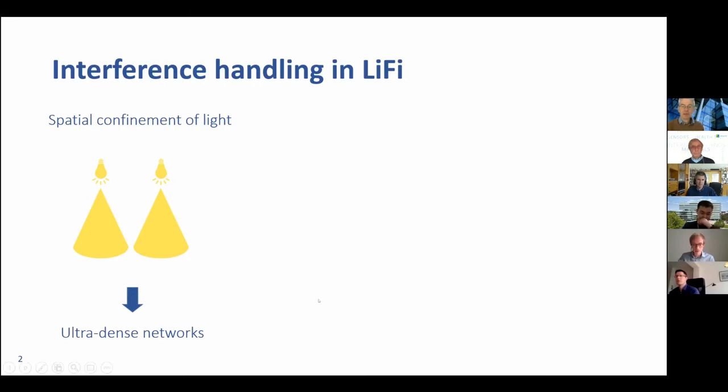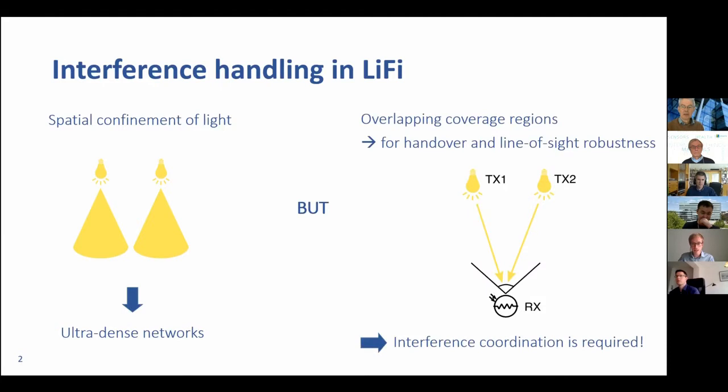This also has the disadvantage that having these overlapping coverage regions result in handover and line of sight robustness issues. Because if you're only connected to one light source and that light source is blocked, then you don't have connectivity anymore. Therefore, usually we have two light sources with an overlapping area. But the result is that we need interference coordination, because they can interfere with each other.